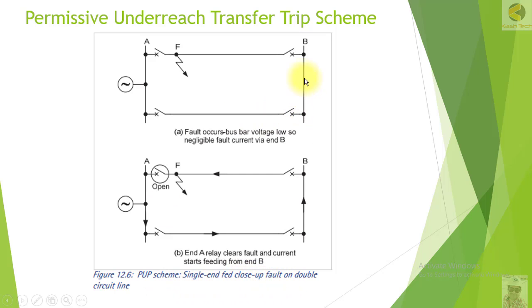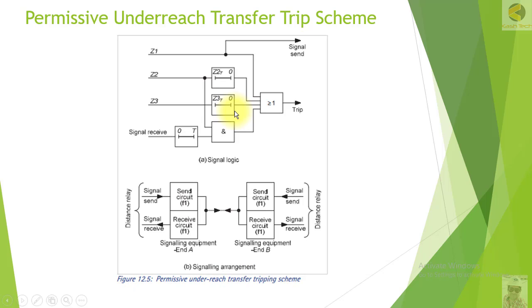This phenomenon normally occurs on double circuit lines. This is the logic diagram for the PUTT scheme. If there is a fault in Zone 1, the relay will trip the local breaker immediately through Zone 1 and will send a signal to the remote end.